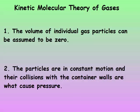Kinetic molecular theory has four parts. It says that the volume of individual gas particles can be assumed to be zero. Gas particles' volume aren't really zero, so this one isn't strictly true, but it makes solving problems much easier. The volume is very tiny, so we still assume the volume to be zero — it's just very small in comparison to the container.